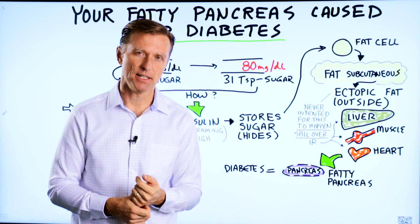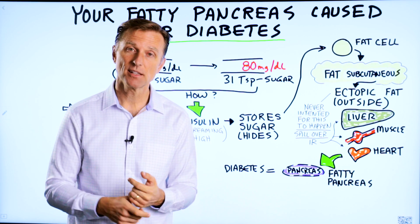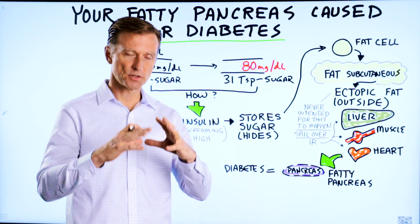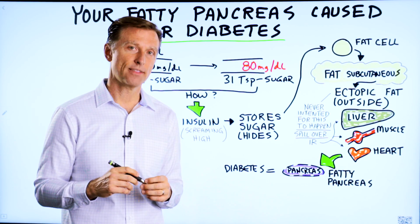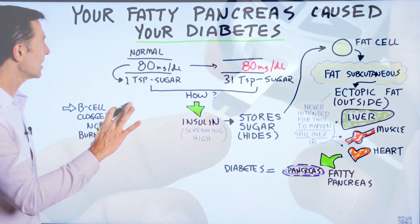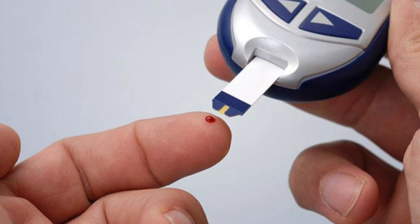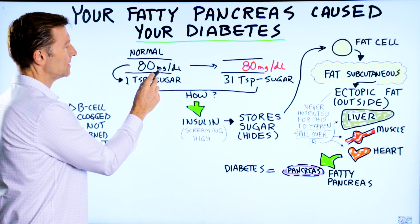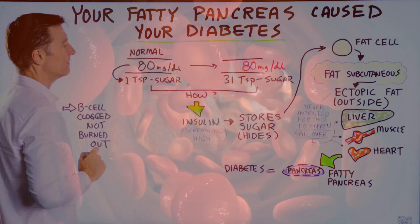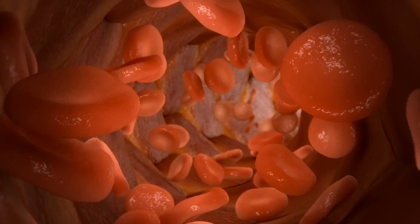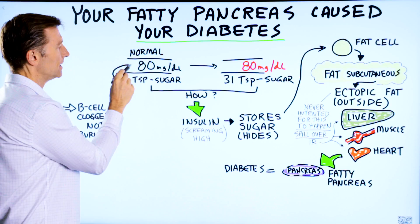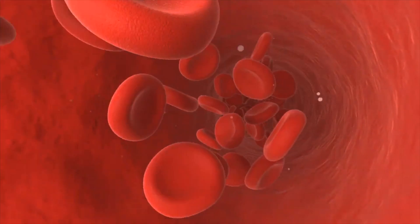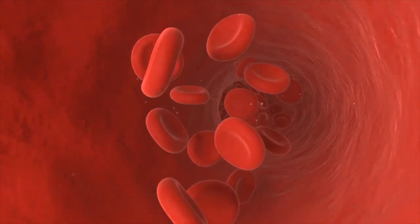Let's talk about what caused your diabetes. If you have diabetes, this video is for you — it's a very important video to help you understand how you got there. The first thing I want to talk about is normal blood sugar. A person who is healthy should normally have about 80 milligrams per deciliter of sugar in their blood, which means you basically have about one teaspoon of sugar in your blood. That's not that much.